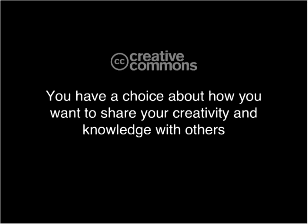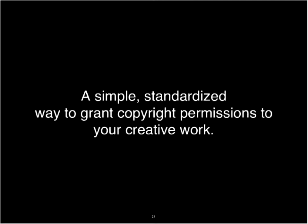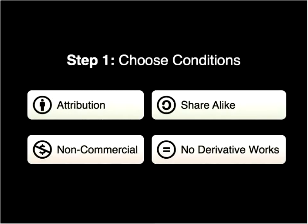Going back to the internet stack, there's friction at the top content layer because of increasingly restrictive copyright laws, and there can be a great deal of cost in negotiating these rights. What Creative Commons basically does is help lower these transaction costs of sharing content on the web by granting permission in advance through a simple copyright license. The Creative Commons license is an easy, standardized way to grant permissions to your work while reserving rights to others.